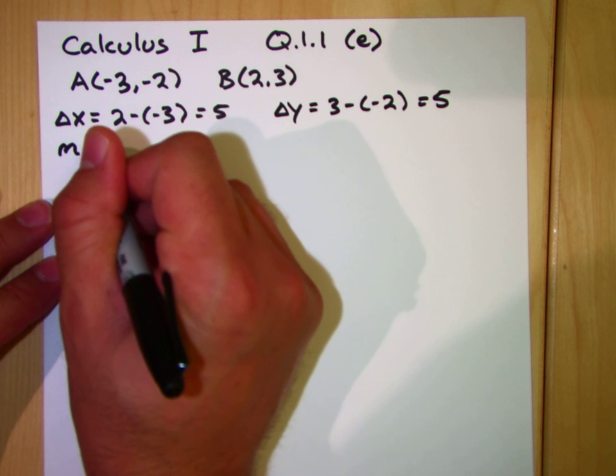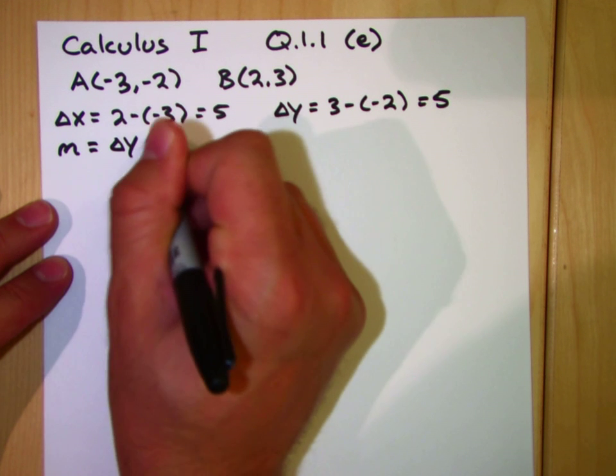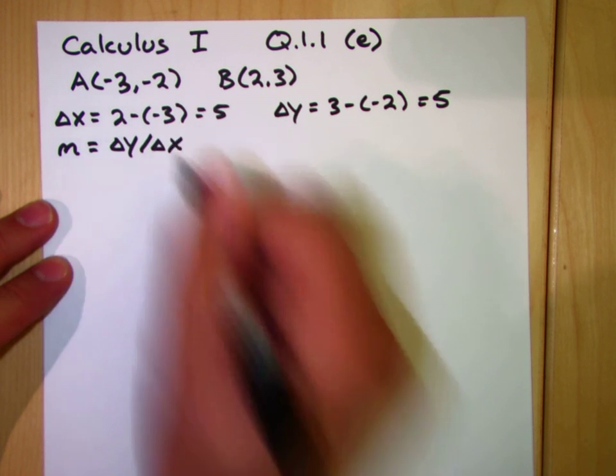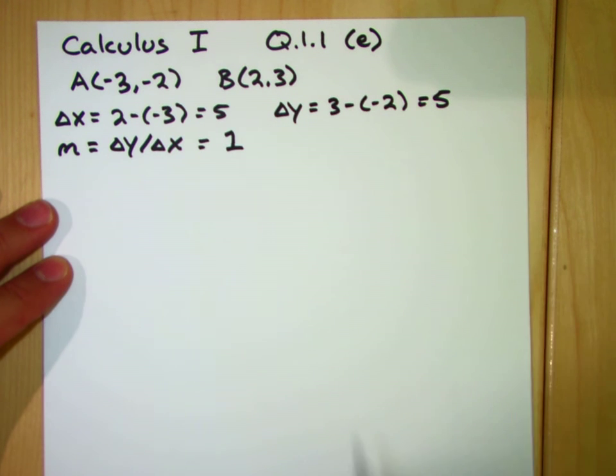Meaning that the slope of this line connecting these two points is equal to delta Y over delta X, which is just 5 over 5, which is 1.